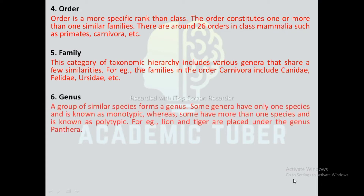Genus: A group of similar species forms a genus. Some genera have only one species and are known as monotypic, whereas some have more than one species and are known as polytypic. For example, lion and tiger are placed under the genus Panthera.